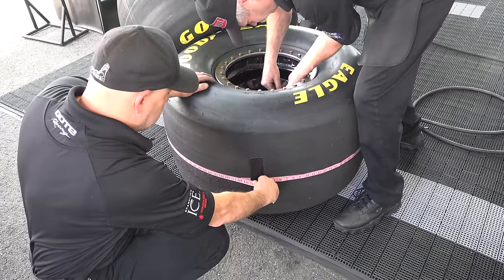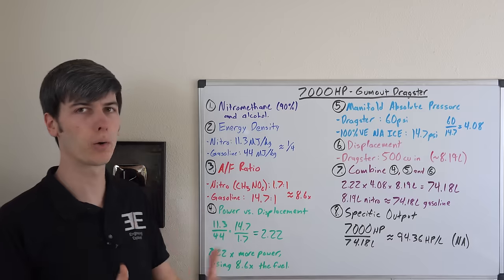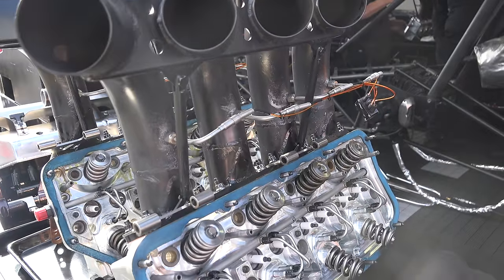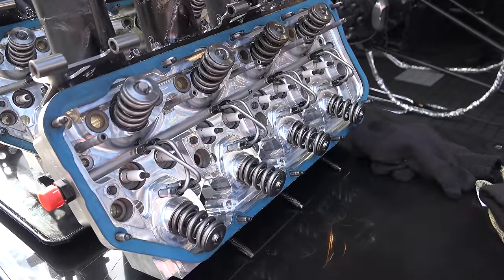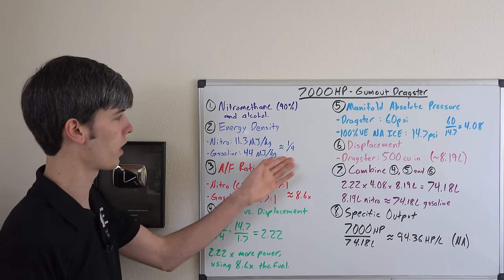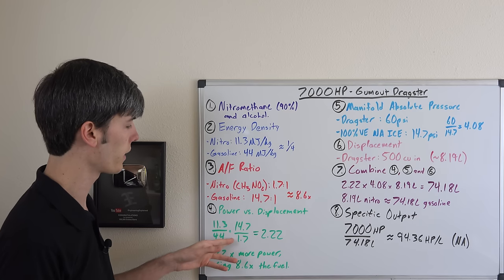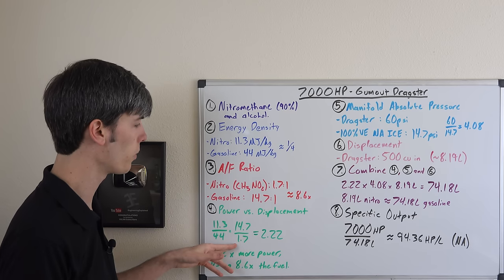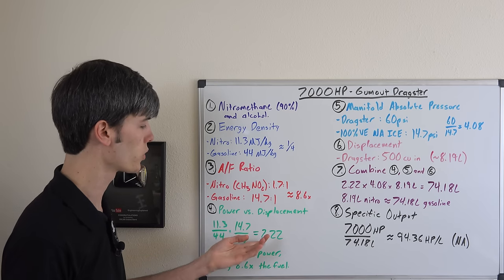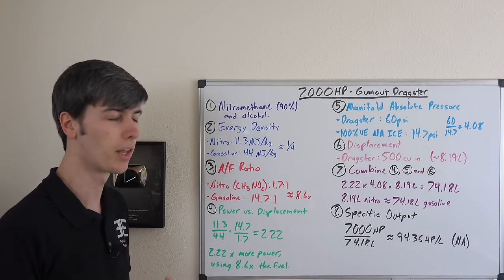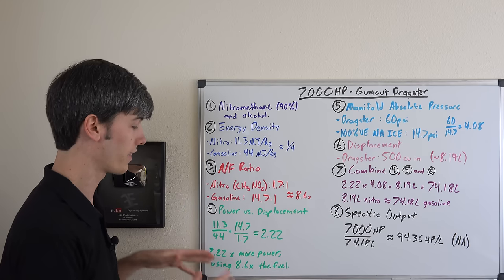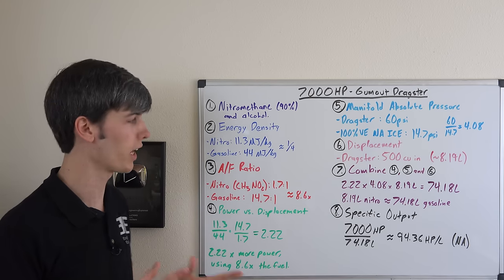So let's do a little math with what we've learned so far and find out just how much more power we can create with nitromethane with the same displacement engine versus gasoline. If we take 11.3 megajoules per kilogram divided by 44 that tells us our energy density and if we multiply that by 14.7 divided by 1.7 that's how much more fuel we can burn. You'll find that with nitro you can produce about 2.22 times the amount of power as gasoline with the same displacement engine but at the expense of using 8.6 times the amount of fuel.